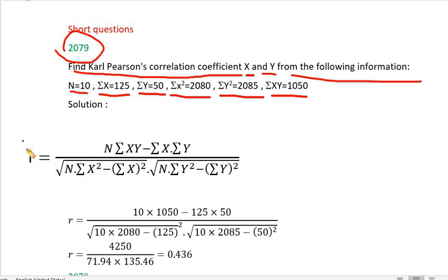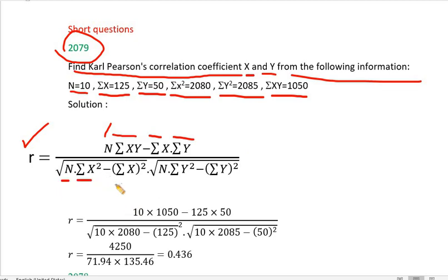Now, r is equal to: n times summation xy minus summation x times summation y, divided by root over n times summation x squared minus summation x squared, multiplied by root over n times summation y squared minus summation y squared.